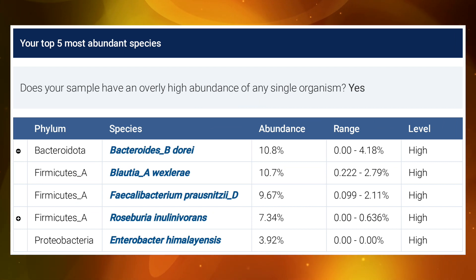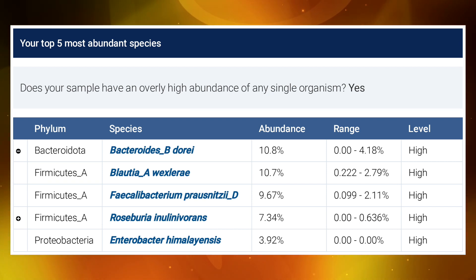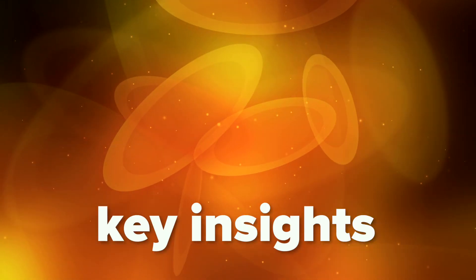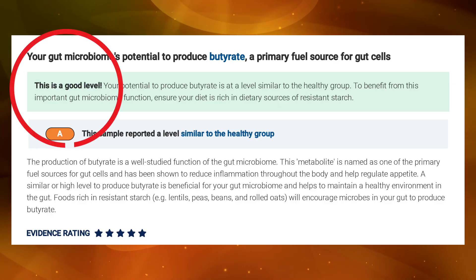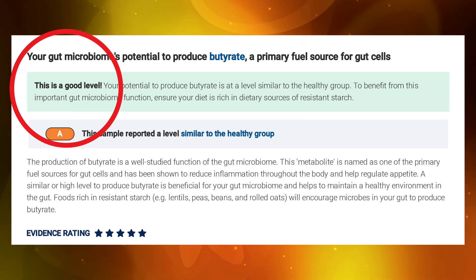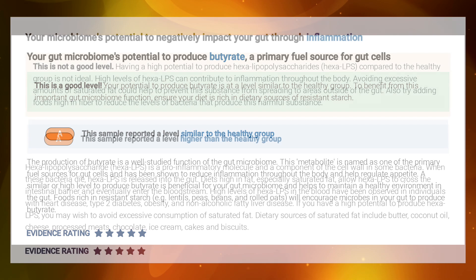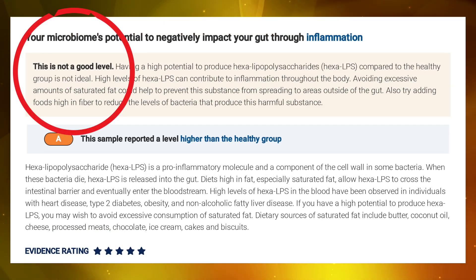Your microbial community chart will show you the top five most abundant species living in your microbiome. Detailed descriptions will show you what has been detected at good levels along with what you should be doing to keep yourself at a good level, and not-so-good levels and what you can do to help improve this level.